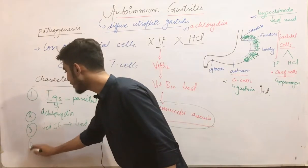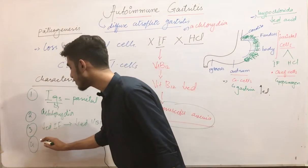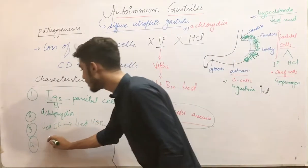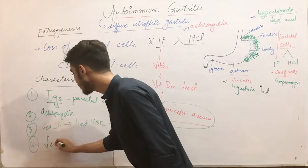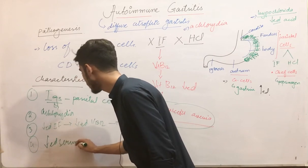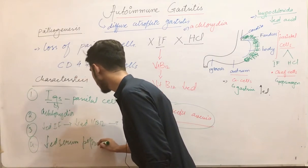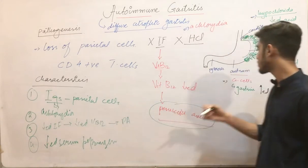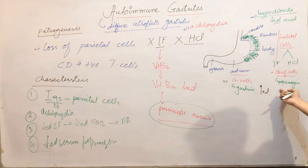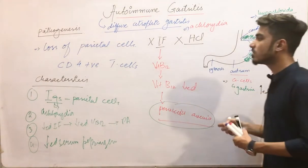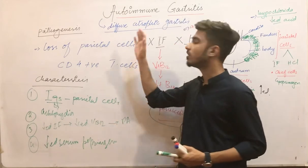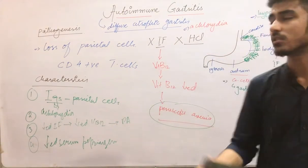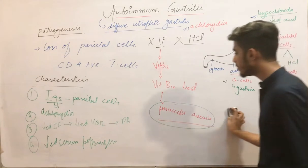Due to the loss of chief cells, there is also decreased serum pepsinogen. So the key characteristics are: antibodies against parietal cells (diagnostic), achloridea, decreased intrinsic factor, pernicious anemia, and decreased serum pepsinogen.